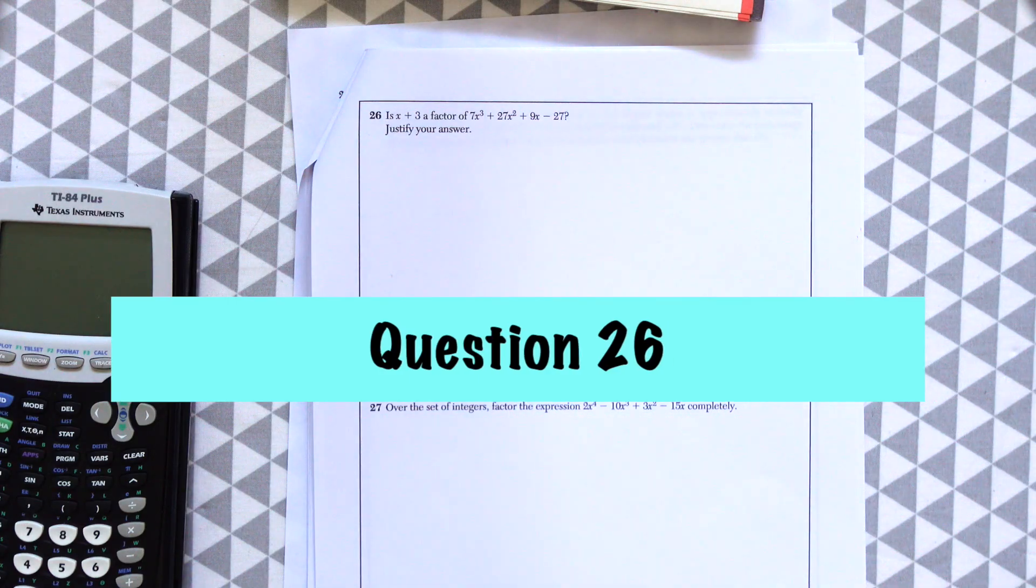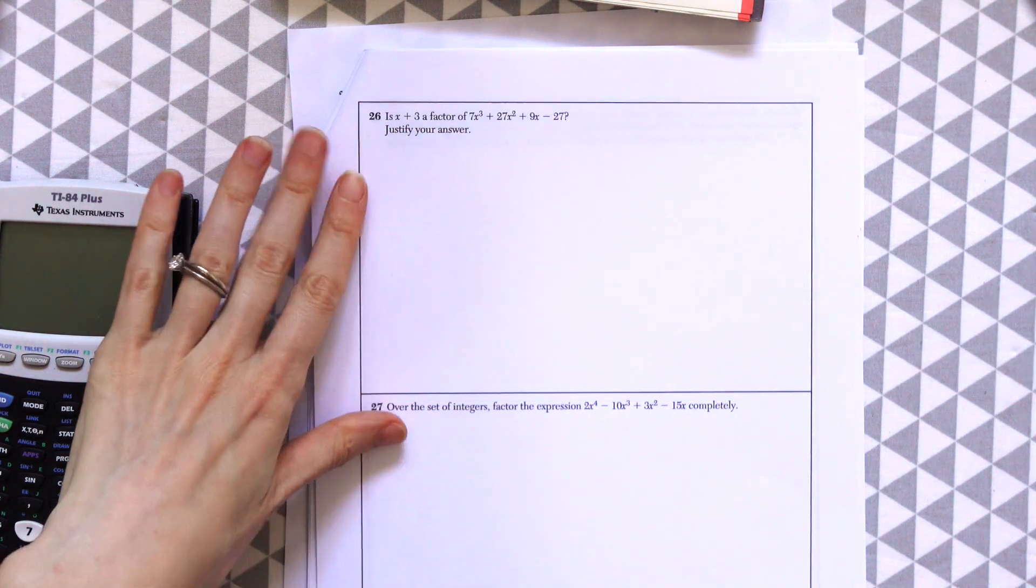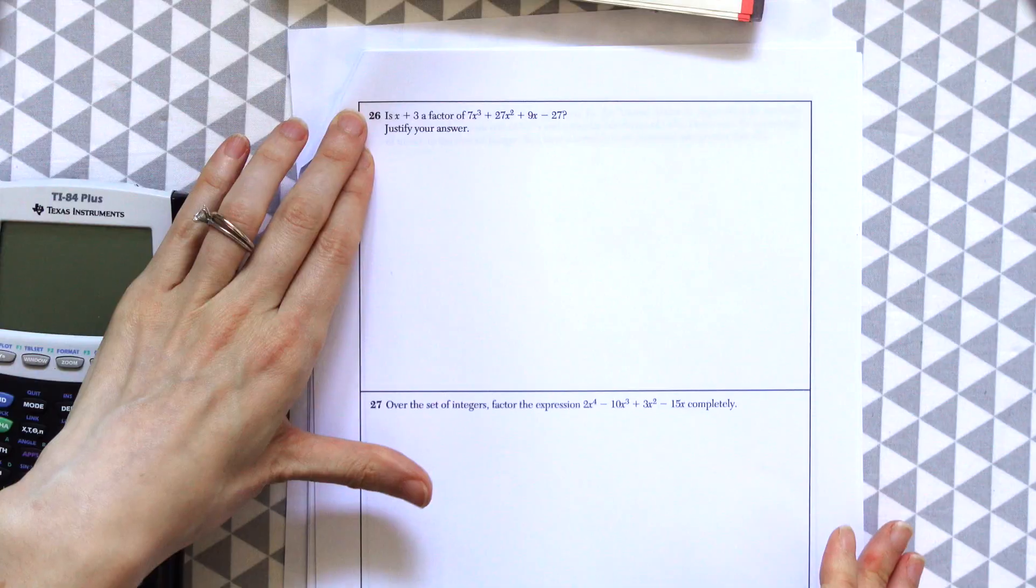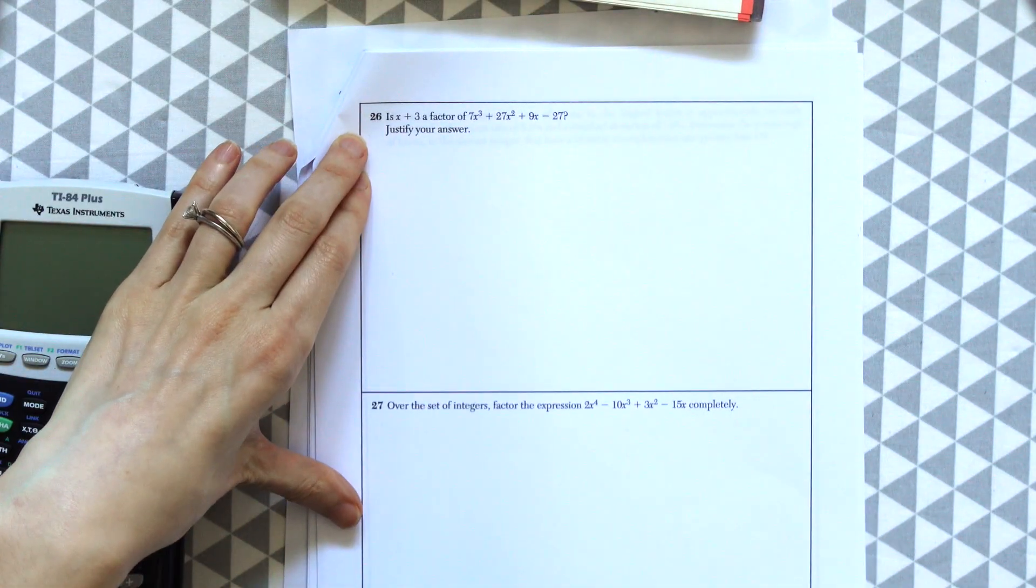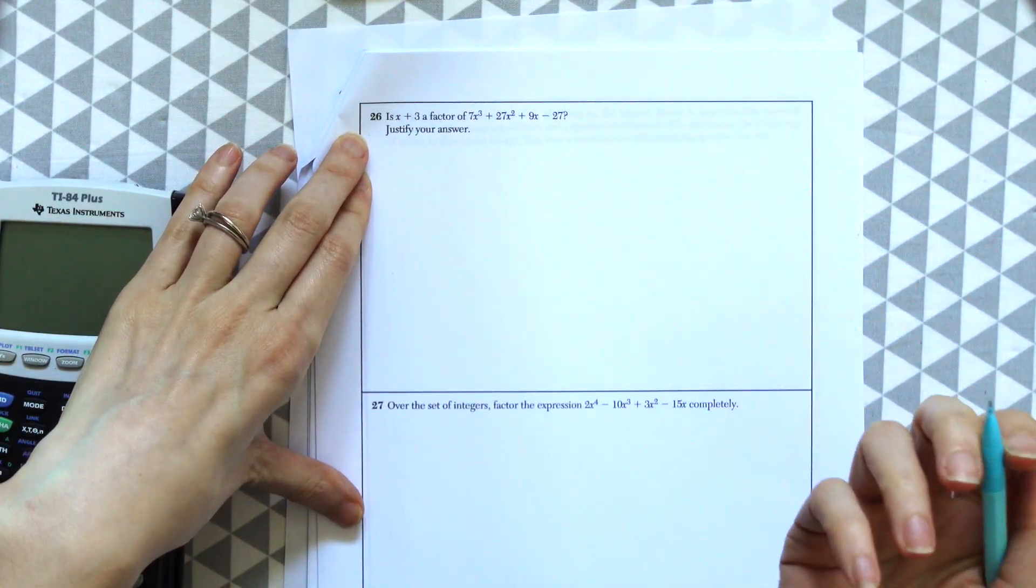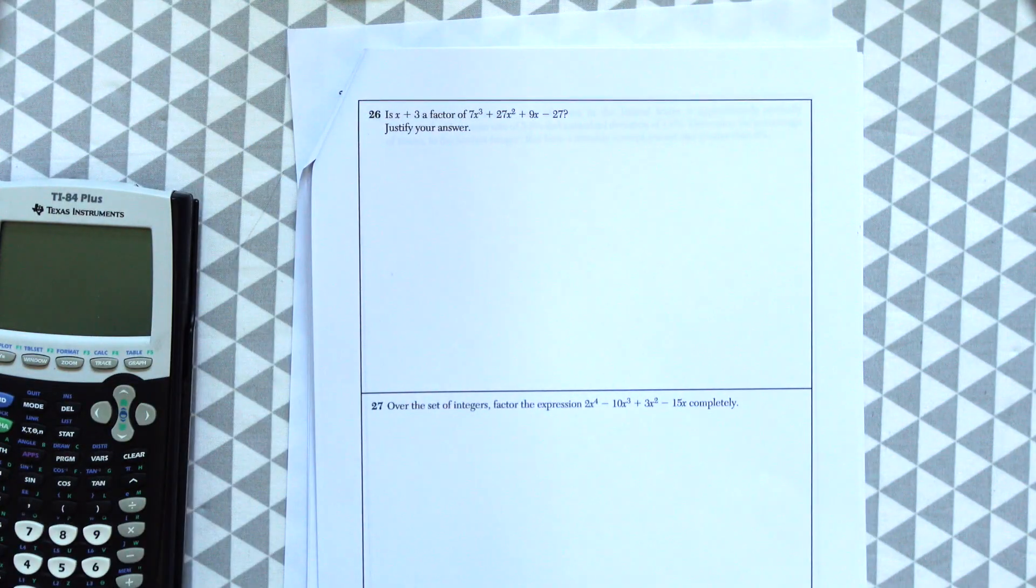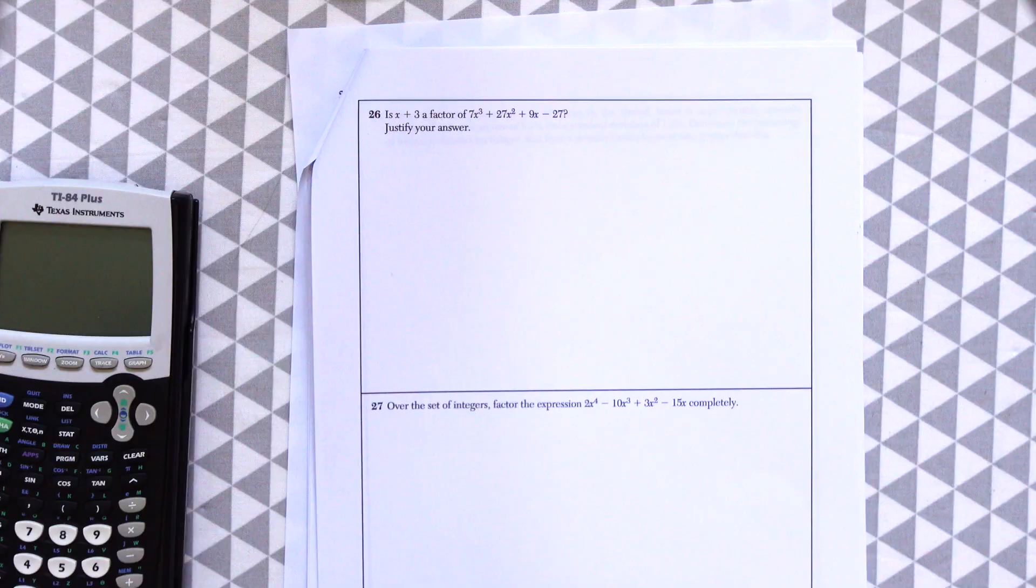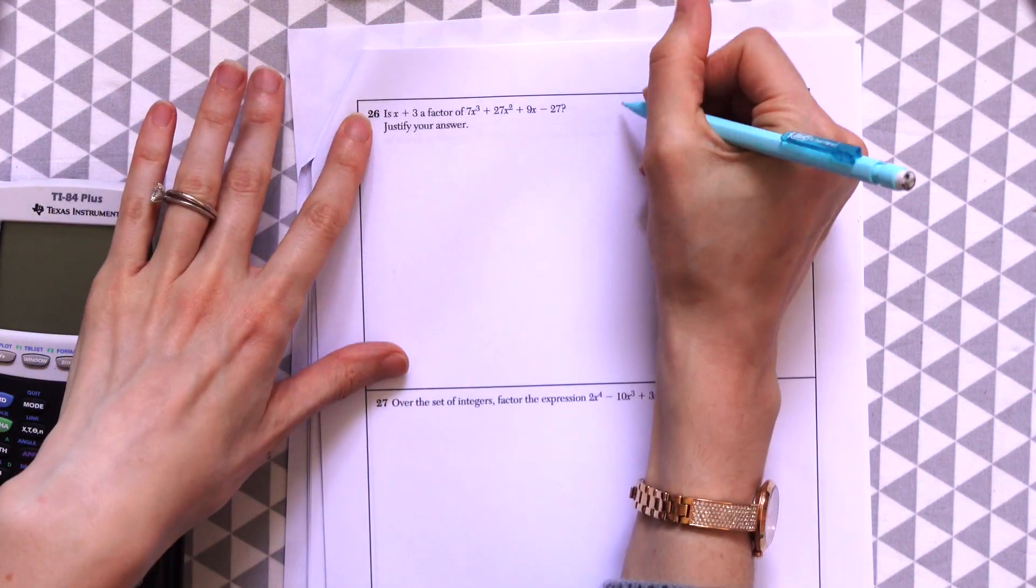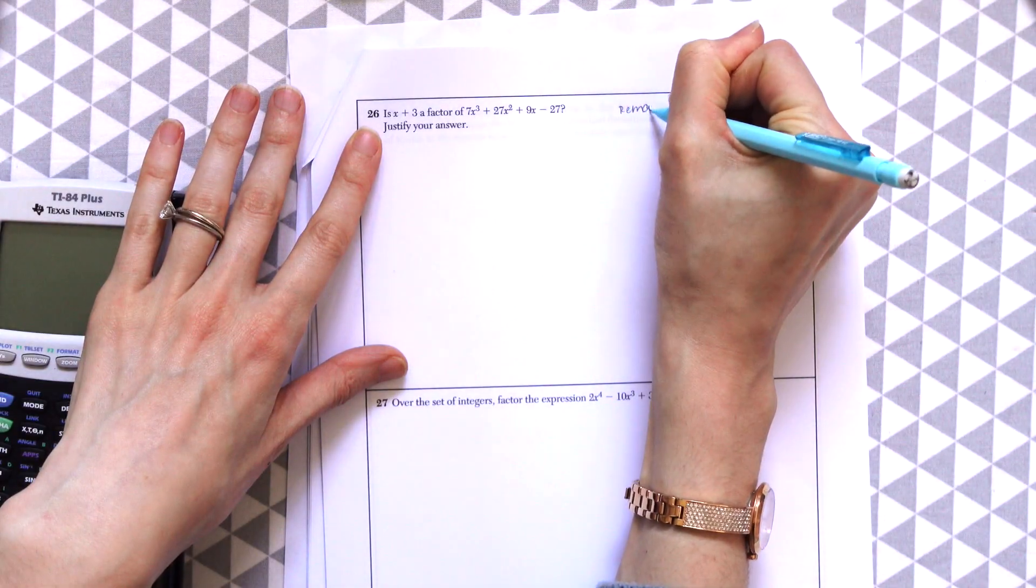Question 26. Is x plus 3 a factor of 7x cubed plus 27x squared plus 9x minus 27? Justify your answer. So here we're going to be using synthetic division. We're going to see if we get a remainder of 0. If we do, this is going to be a factor. This is all based on the remainder theorem.